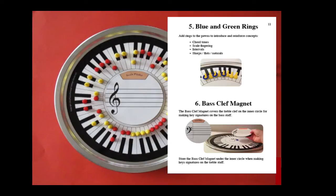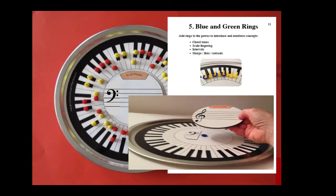A bass clef magnet is included. It covers the treble clef sign on the inner circle so that key signatures may be made on the bass staff also. When the bass clef is not being used, the magnet can be stored under the inner circle.